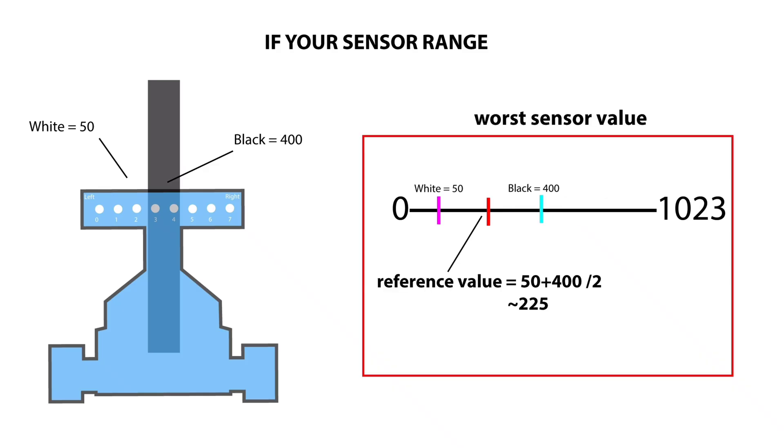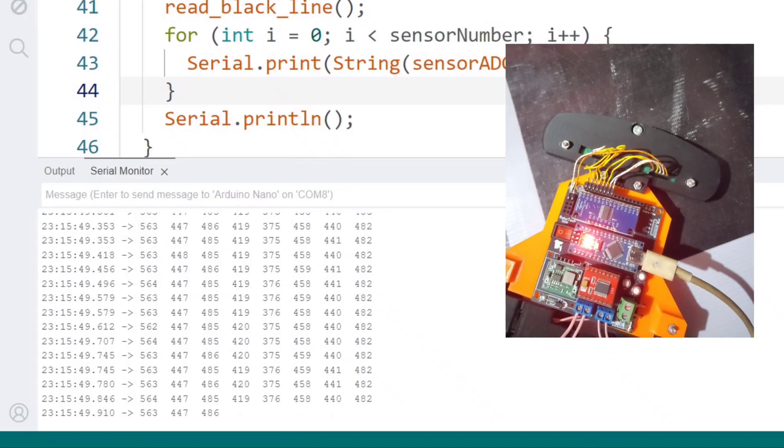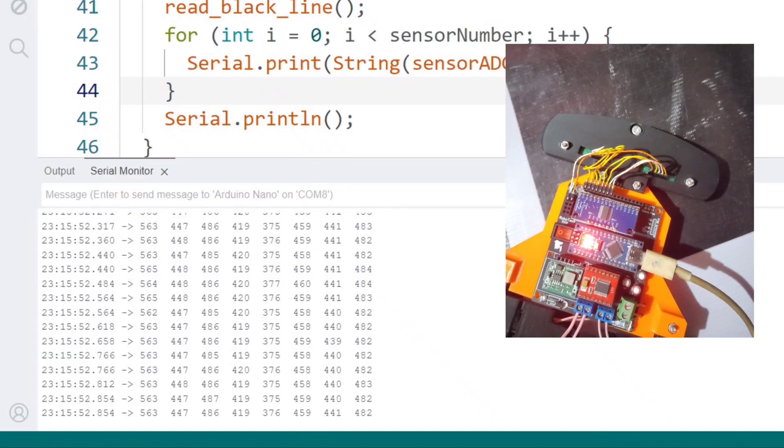If it drops to 400, the reference becomes 225, which is the worst case. If your sensor gives such low maximum values, you should consider changing its circuit.